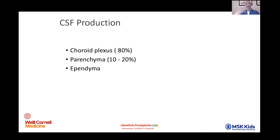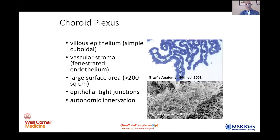Where is CSF produced? For all intents and purposes, the choroid plexus is the main generator — we'll get into that in more detail. We know very well that CSF can continue to be produced even in the global absence of the choroid plexus, through transcellular membrane production via the ependymal layer. This usually happens as a compensatory process when intraventricular pressure is dramatically raised. The choroid plexus is a wonderful visual you get with neuroendoscopy or during ventricular surgery, which we commonly perform in children.